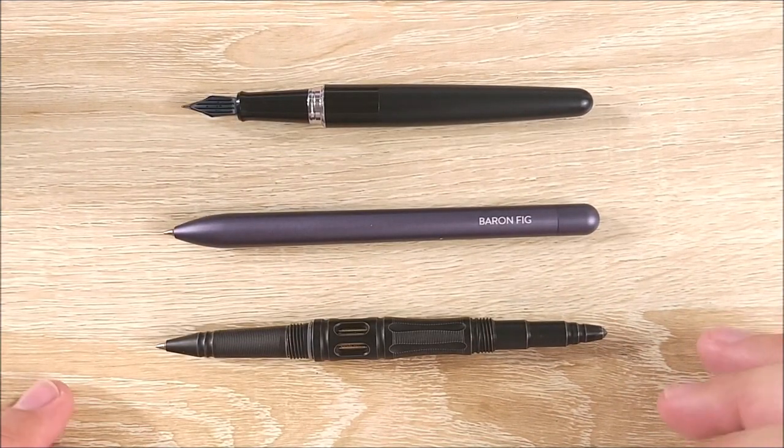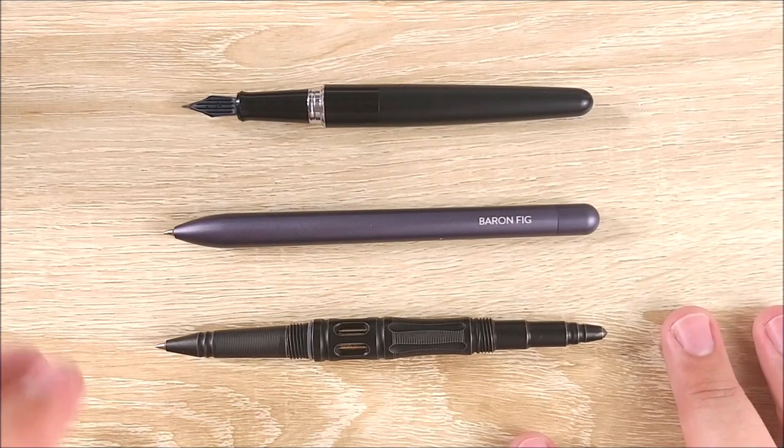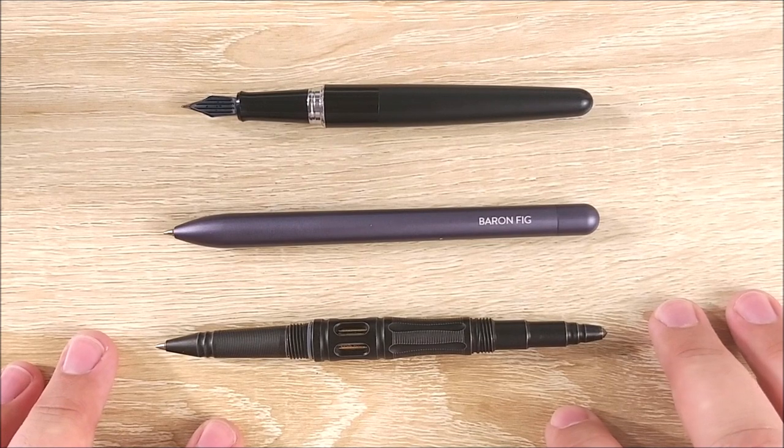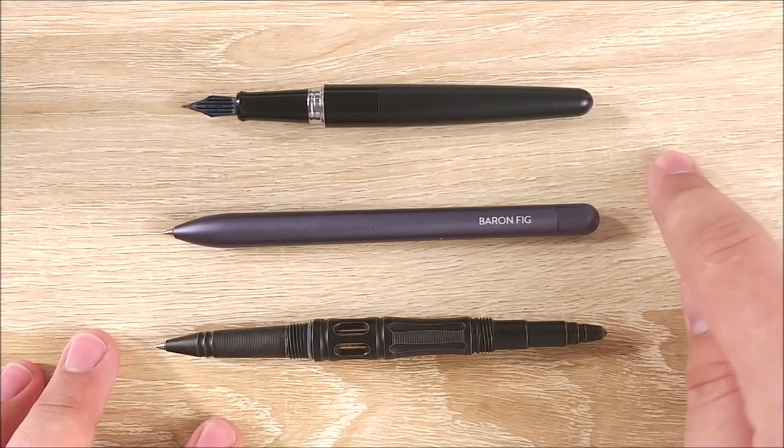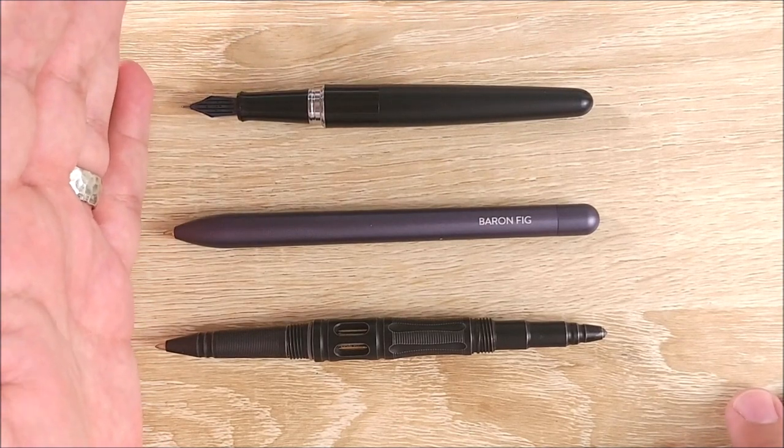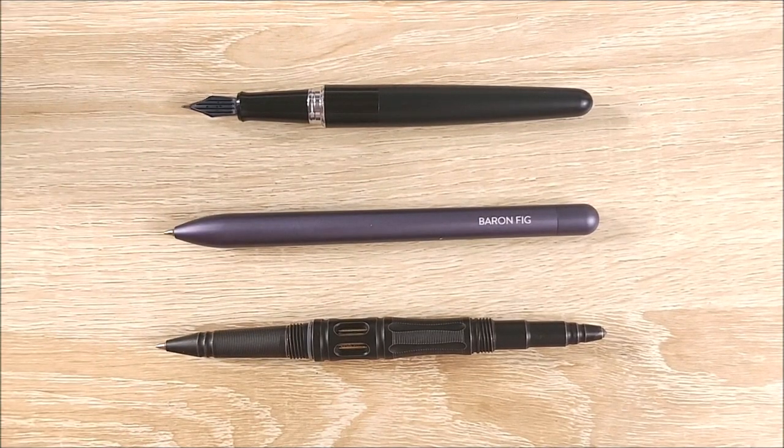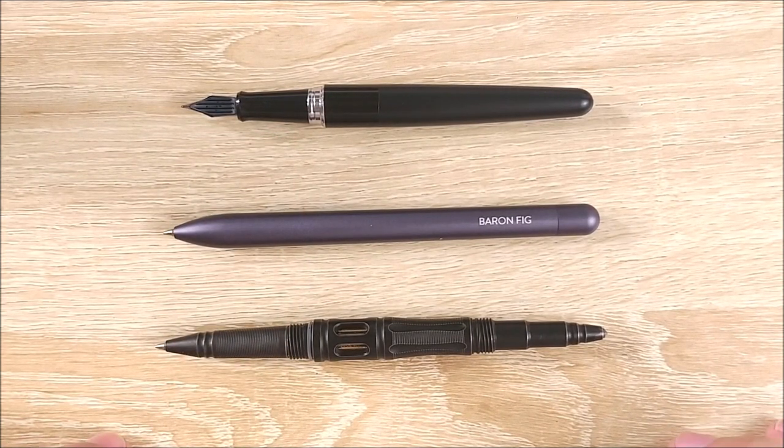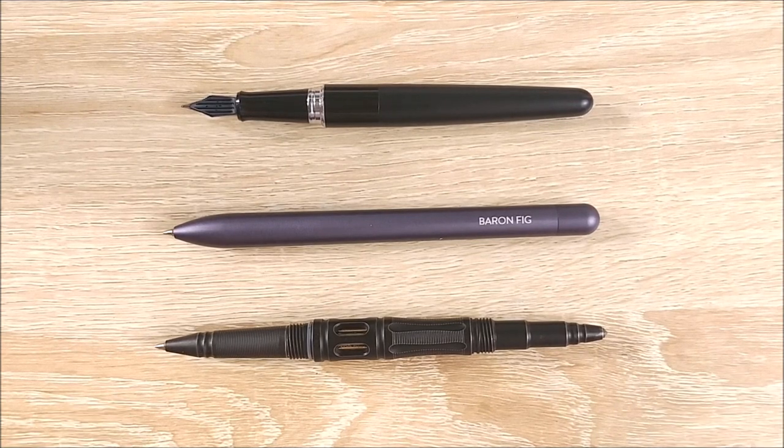Here it is uncapped. You can see it retains a lot of the size from when it's capped. It caps very deeply, and it posts very deeply too, we'll get to that in a bit. But you can see it absolutely dwarfs the Metropolitan. It comes up to about just a little bit past the nib of the Metropolitan, but if you're holding a fountain pen, you're going to grip more back here.